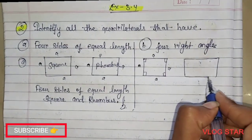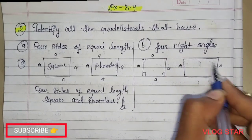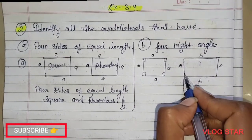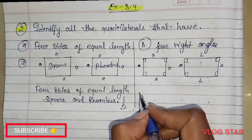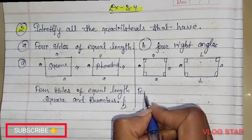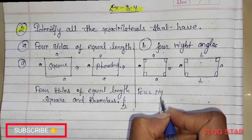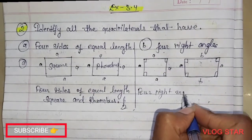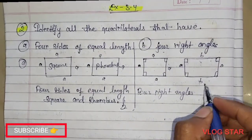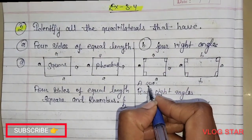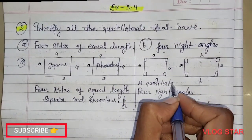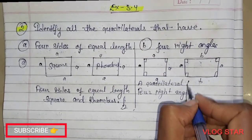know that opposite sides are equal and all the angles are right angles. So this question's answer will be: a quadrilateral that has four right angles...